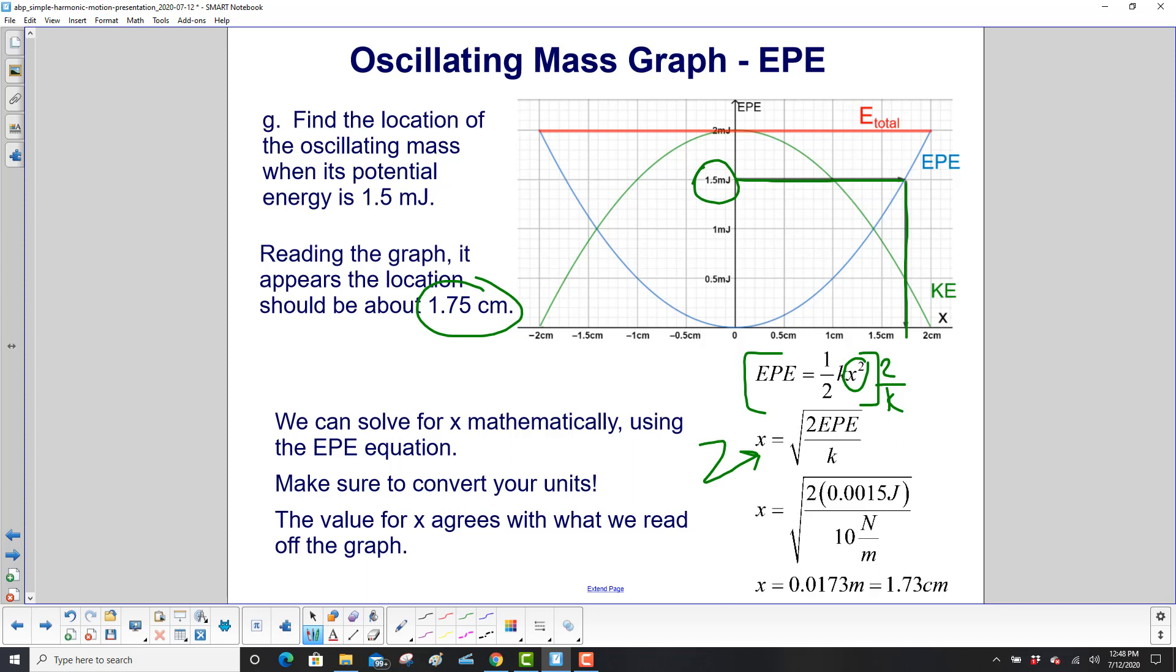So x is the square root of 2 EPE over k. Put in our numbers, converting millijoules to joules. And you get 0.0173 meters. Or move the decimal 2 to the right, and you get 1.73 centimeters. And that's pretty close to what we estimated using the graph.